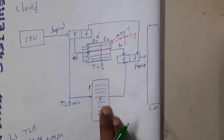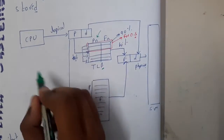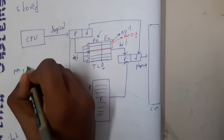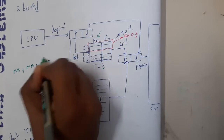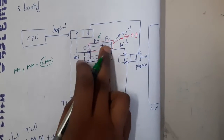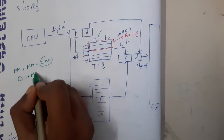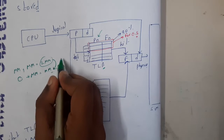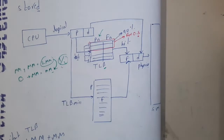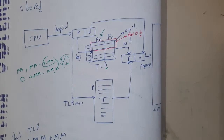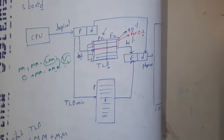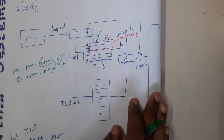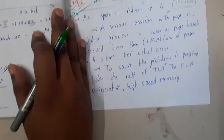Previously, accessing the page table took main memory time, and accessing the actual data also took main memory time — so two memory accesses total. But since TLB is a hardware component, its access takes negligible time, and the only significant time is one main memory access. So if we were taking 30 minutes before, now we can reach in 15 minutes.